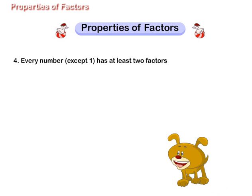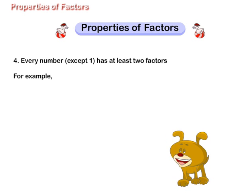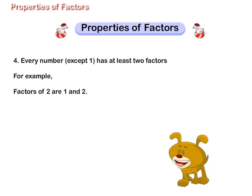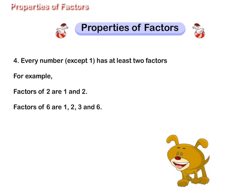Property 4: Every number except 1 has at least 2 factors. For example, factors of 2 are 1 and 2. Factors of 6 are 1, 2, 3 and 6.